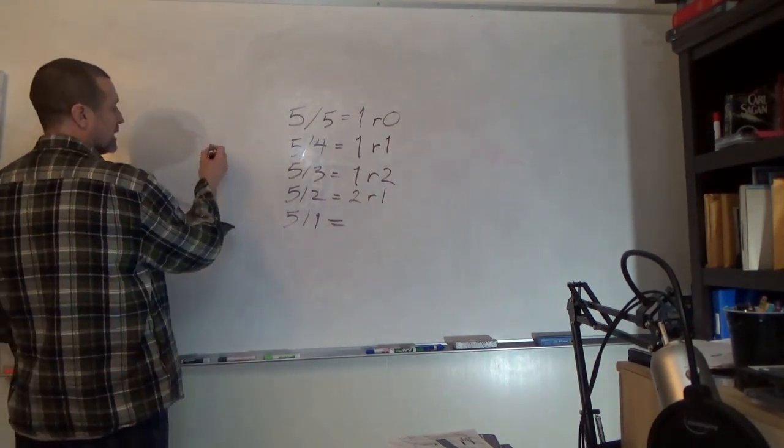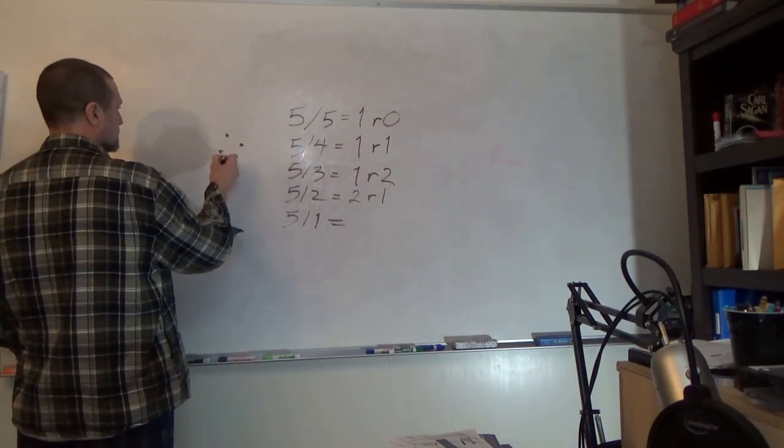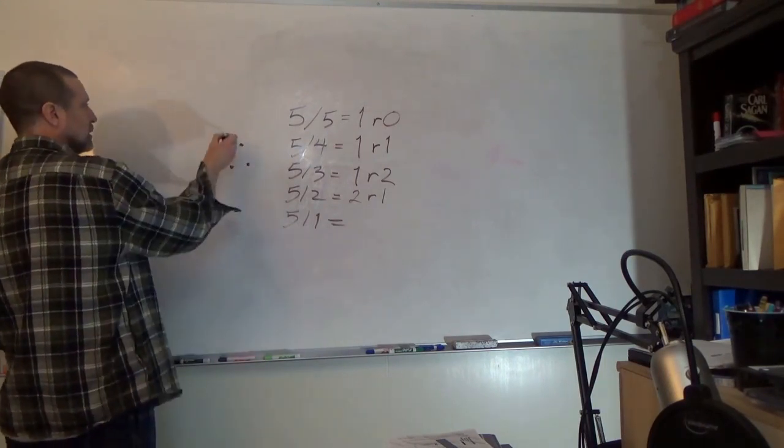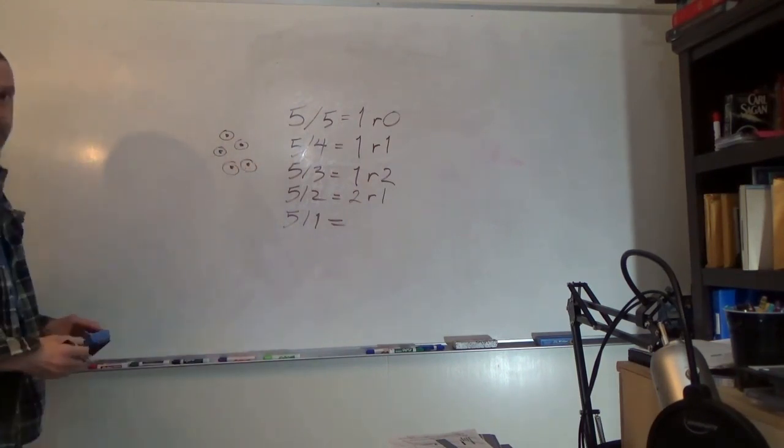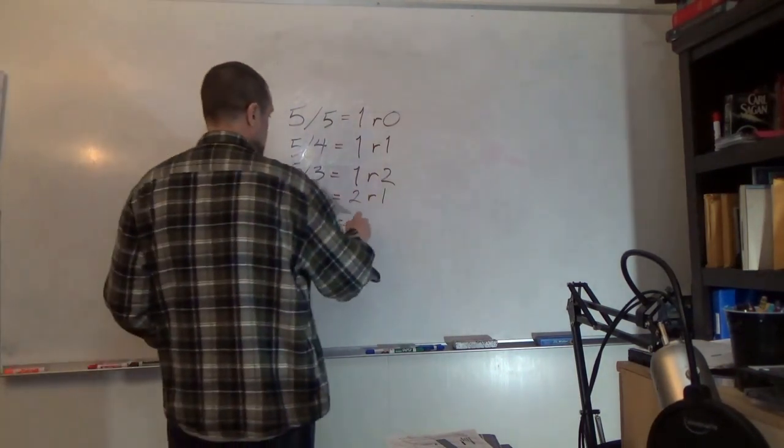5 divided by 1: 1, 2, 3, 4, 5. Well, I got 1, 2, 3, 4, 5 groups of 1 with no remainder.